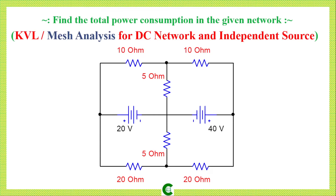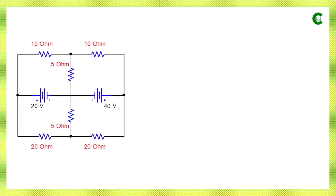We will quickly simplify this electrical circuit by using KVL or mesh analysis. This is our electrical circuit where we can see we have two DC voltage sources and six resistors.